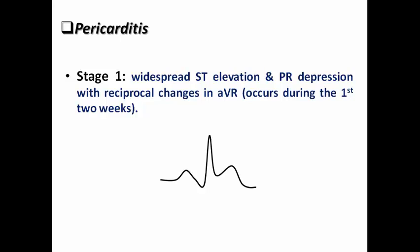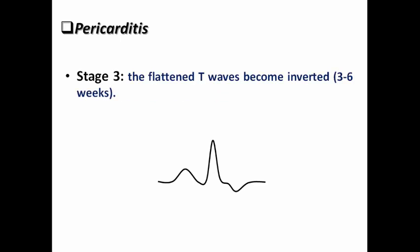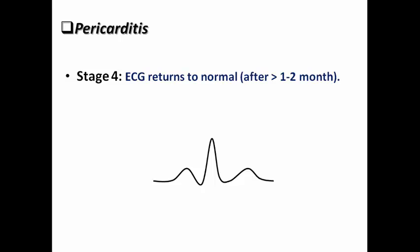Let's look at the temporal ECG evolution of pericarditis. Stage 1: widespread ST elevation and PR depression with reciprocal change in AVR — occurring in the first 2 weeks. Stage 2: ST segment normalizes with generalized T wave flattening — within 1 to 3 weeks. Stage 3: T waves become inverted — within 3 to 6 weeks. Stage 4: everything returns to normal after more than 1 to 2 months.